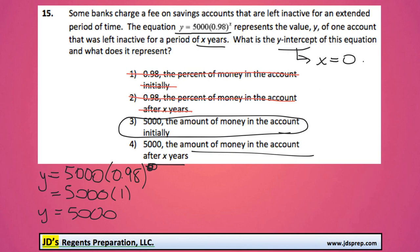Whoever's account this was, they started with $5,000. After the first year, they would start losing money for it being inactive. That's all for this video. Thanks for visiting JD's Regents Preparation.